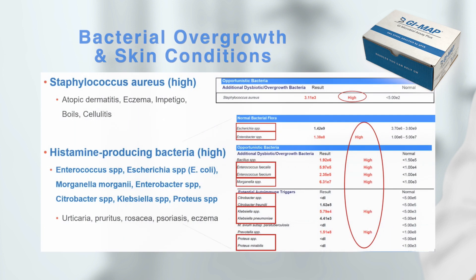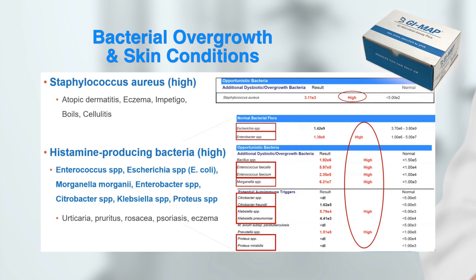Sometimes it's bacterial overgrowth that's a problem. There may be high Staphylococcus aureus, which has been linked with atopic dermatitis, eczema, impetigo, boils, and cellulitis. There are also numerous bacterial species that can produce histamine. When there's an excess of histamine, there may be urticaria, pruritus, rosacea, psoriasis, or eczema.